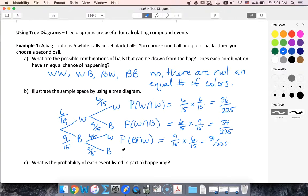Probability of black and black, nine out of fifteen times nine out of fifteen is eighty-one out of two twenty-five.